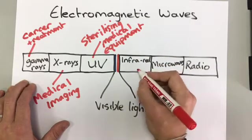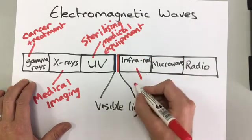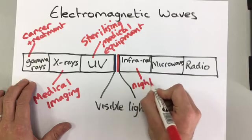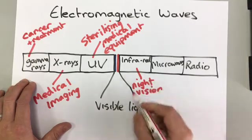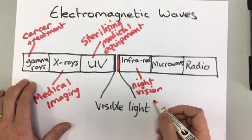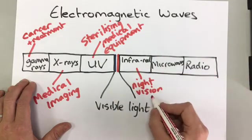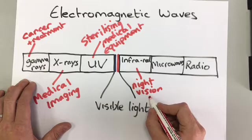Infrared light, we've already talked about. Infrared is used for night vision. But also, it's just used for cooking things. Infrared radiation is heat, and so it's used for cooking things.